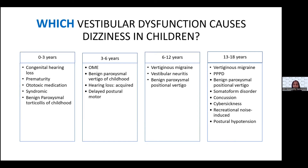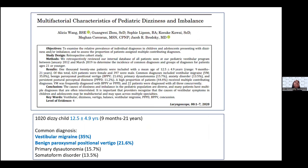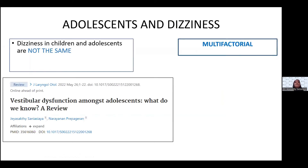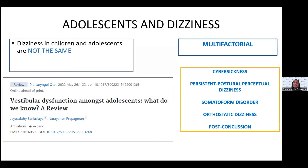Vestibular causes can range from congenital hearing loss to otitis media with effusion and vertiginous migraine in older children. The Brodsky group in Boston published an article on multifactorial characteristics of pediatric dizziness and imbalance. In their cohort of 1,020 dizzy children with a mean age of 12.5, the most common diagnosis was vestibular migraine, followed by benign paroxysmal positional vertigo, and then primary dysautonomia and somatoform disorder. Dizziness in children and adolescents are not the same — vestibular dysfunction in adolescents is multifactorial, attributed to cyber sickness, persistent postural perceptual dizziness, somatoform disorder, orthostatic dizziness, and post-concussion.